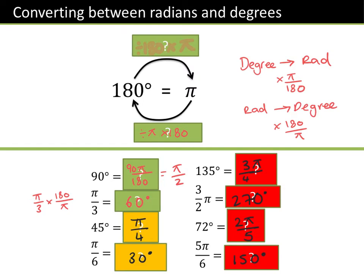So 2π over 5 and 2 over 5 π are exactly the same. If you think about it, 2 over 5 π means 2 over 5 times π. When we multiply fractions, we multiply the numerators together and the denominator. π as a fraction would be π over 1, so that's the same as 2π over 5 times 1 — which is 5. So they are exactly the same.